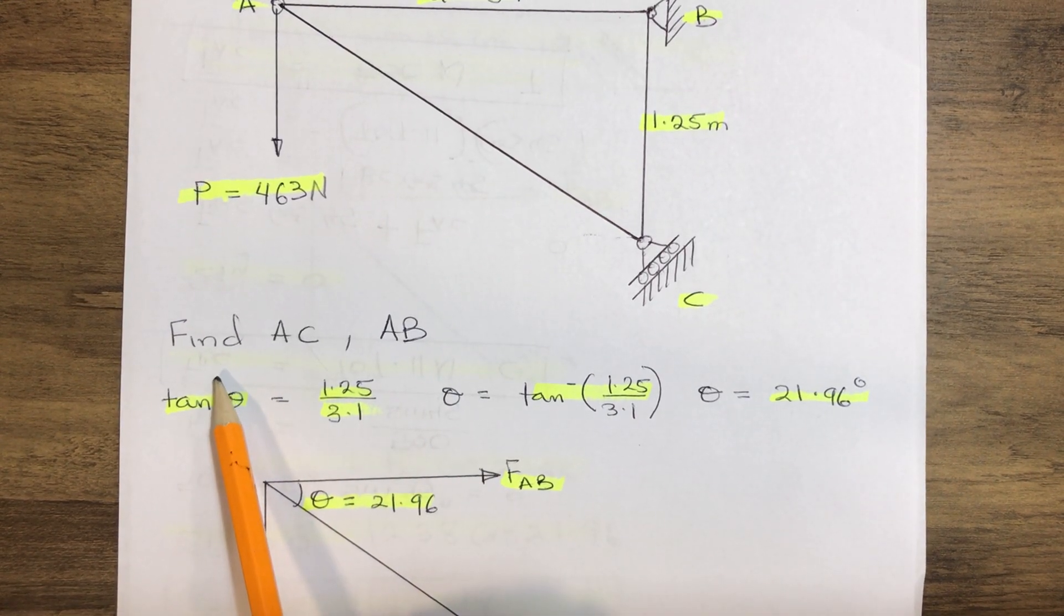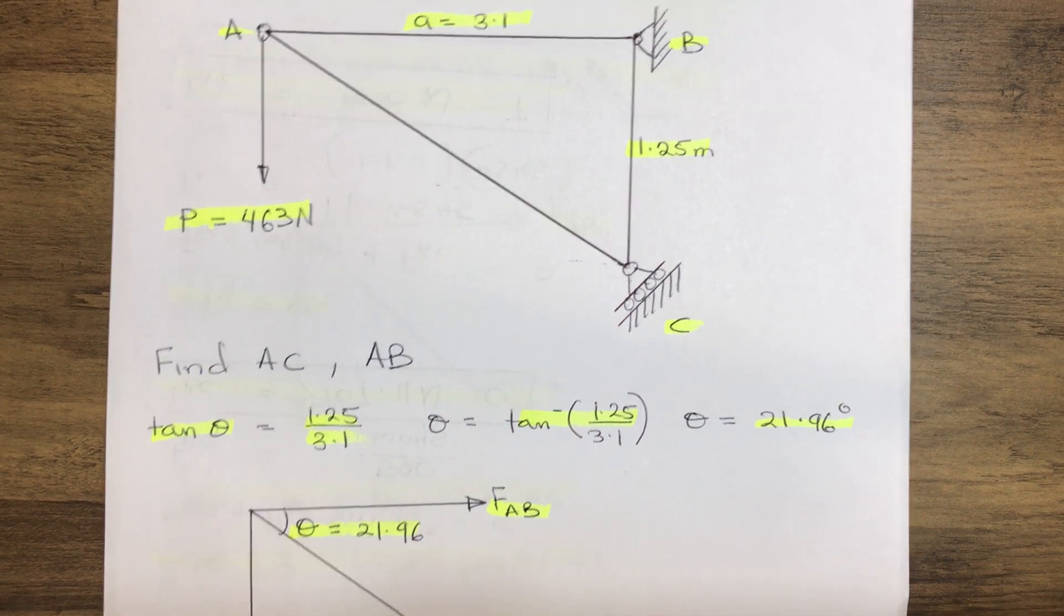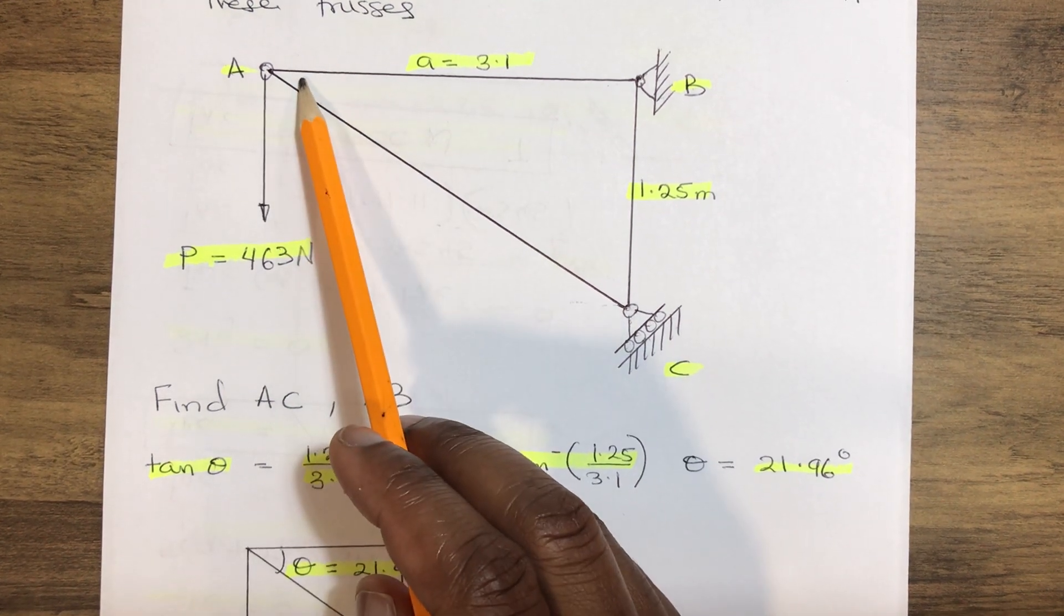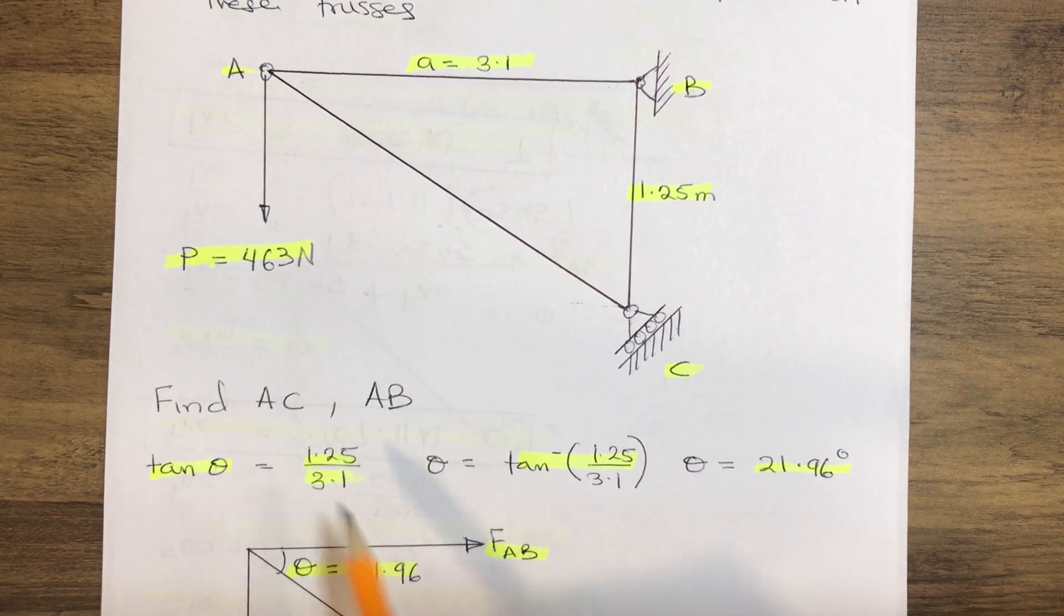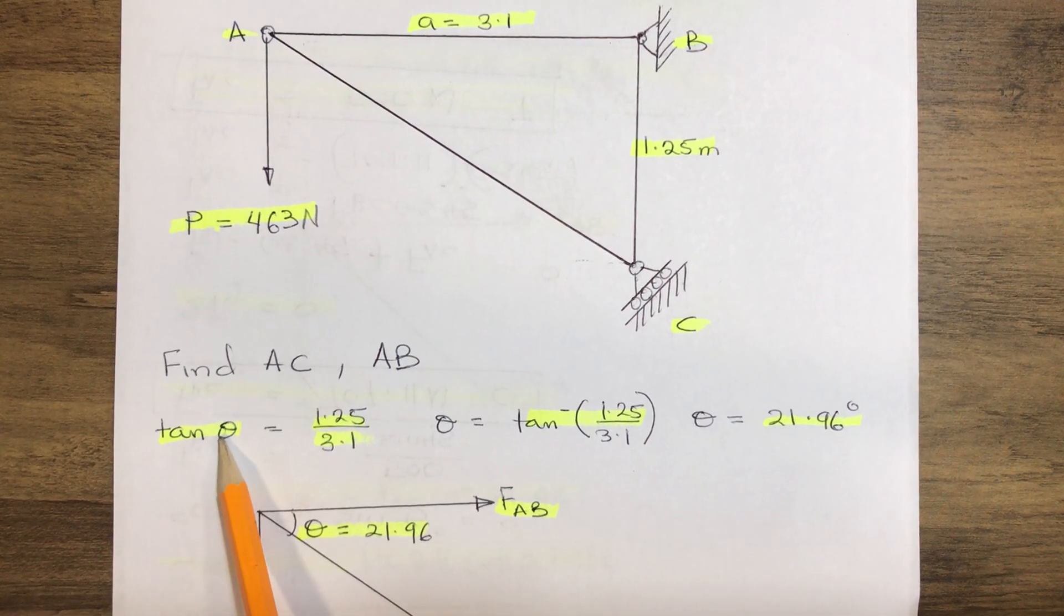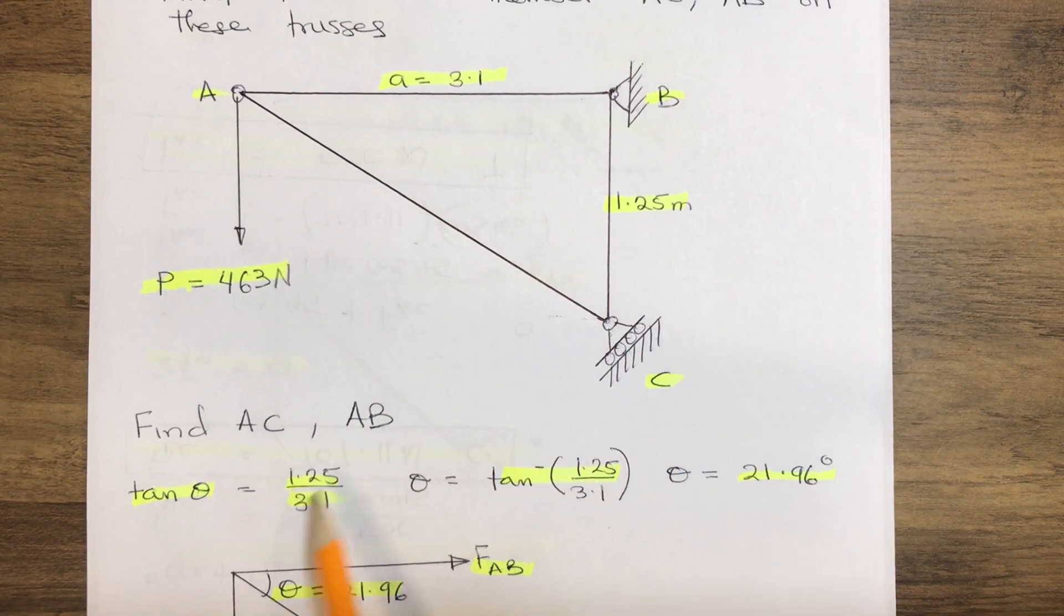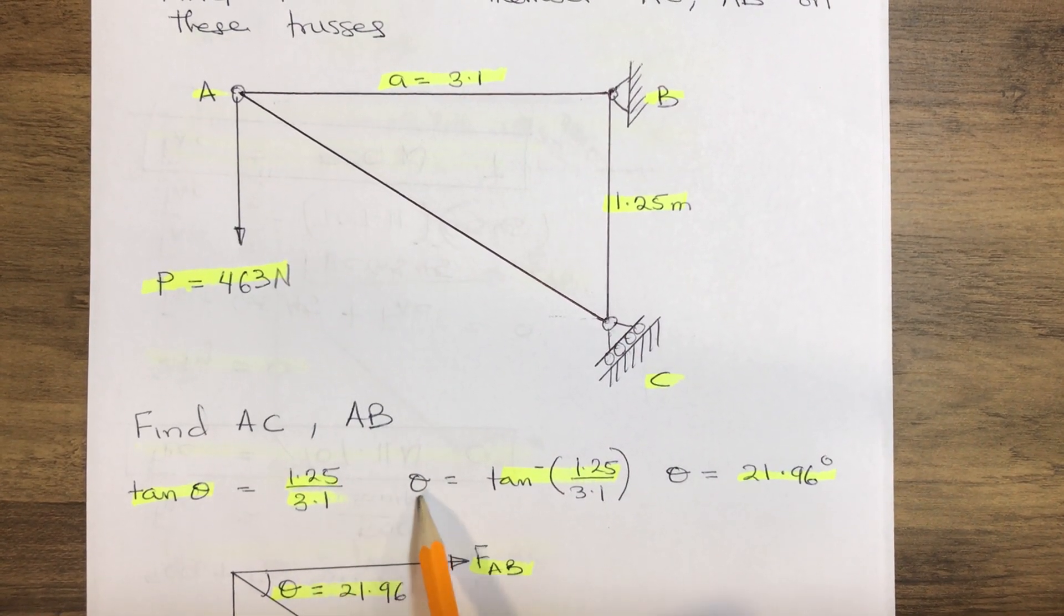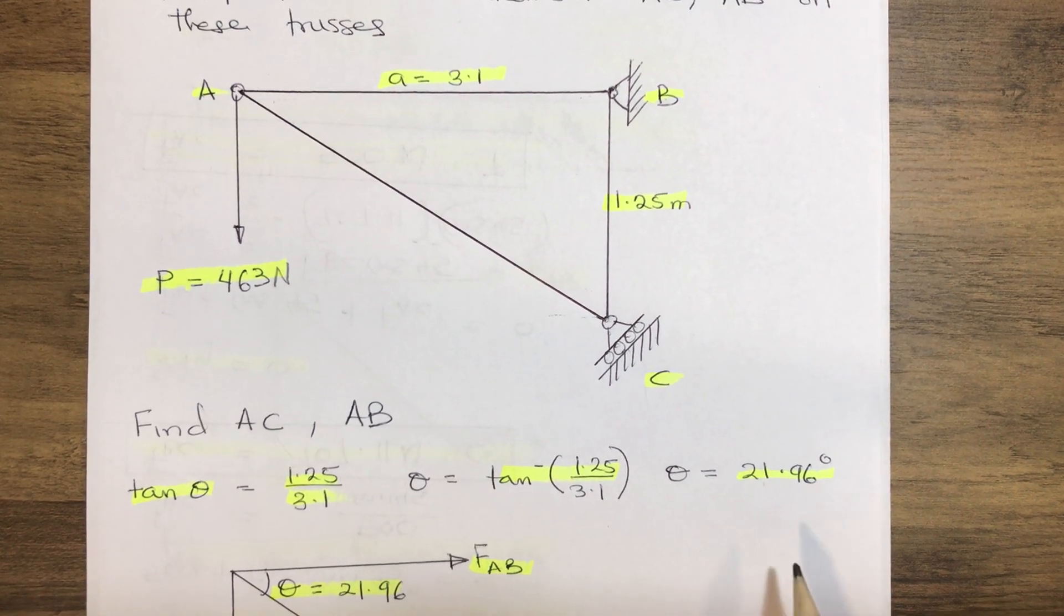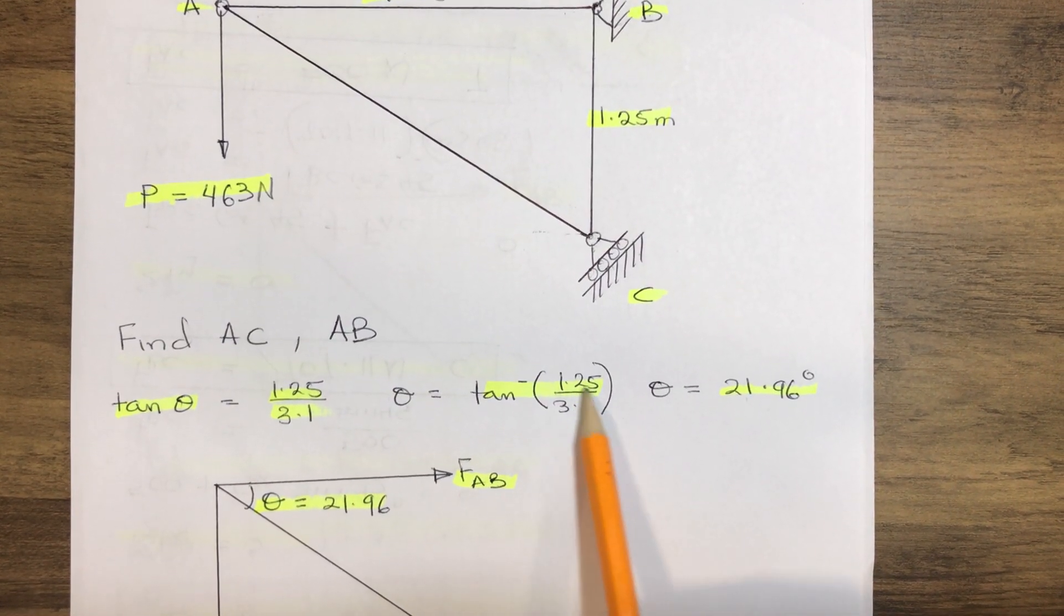Now we are asked to find AC and AB. In order to find this member, we are required to find the angle here. So our angle theta becomes tan theta equals 1.25 over 3.1, so therefore our angle becomes 21.96 degrees by finding the arctangent.